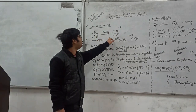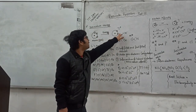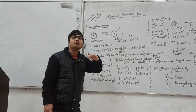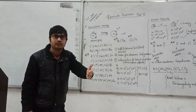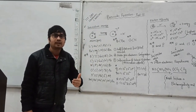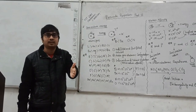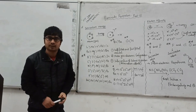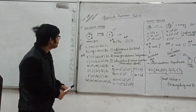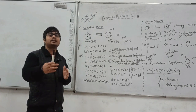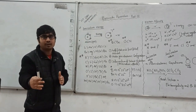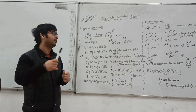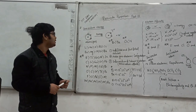Now, if we wanted to remove one more electron from this ion, then definitely we need to provide more amount of energy. That's why the second ionization energy is always higher than the first ionization energy. The third ionization energy will be higher than the second, which is higher than the first.